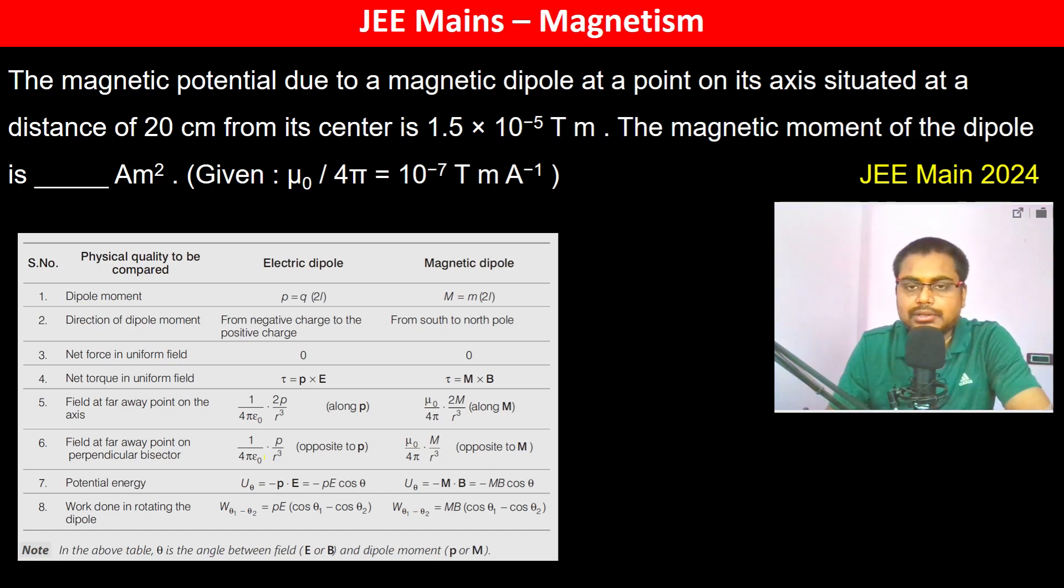The magnetic potential due to a magnetic dipole at a point on its axis situated at a distance of 20 centimeters. Let's look at the similarity in the formulas between electric dipole and magnetic dipole.